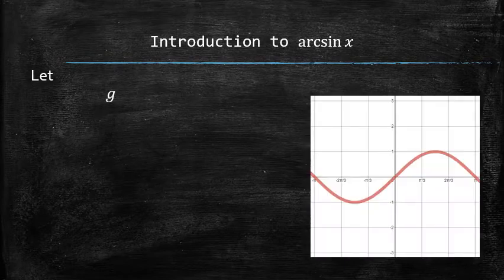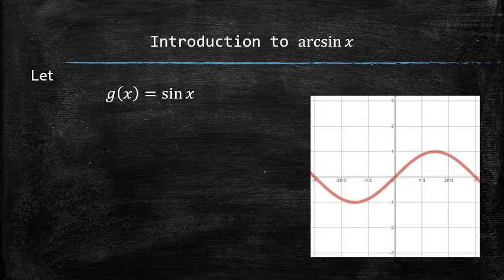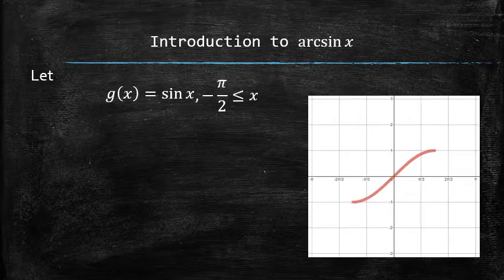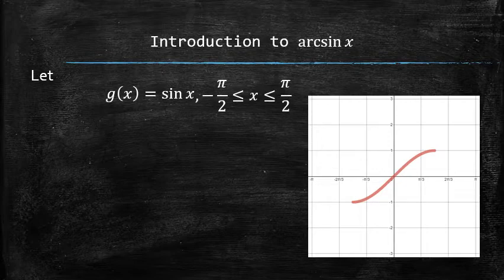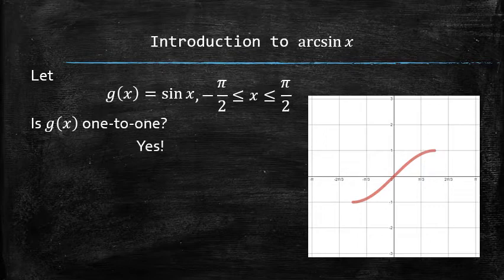Now, let's make a new function g(x) from the sin of x by restricting the domain of the sin function to the closed interval between negative π over 2 and positive π over 2. Is this function one-to-one? Yes, because it passes the horizontal line test.